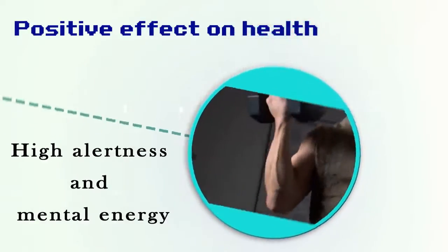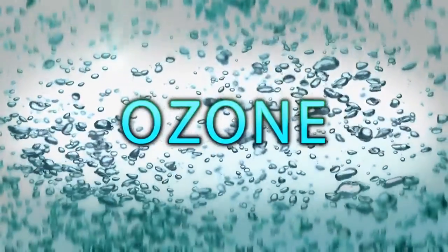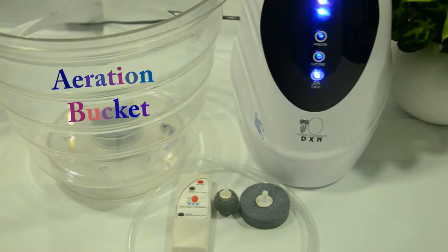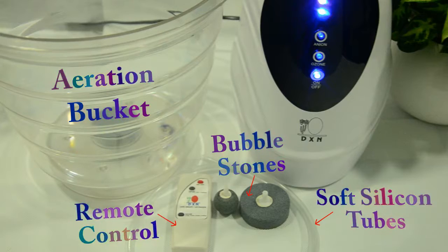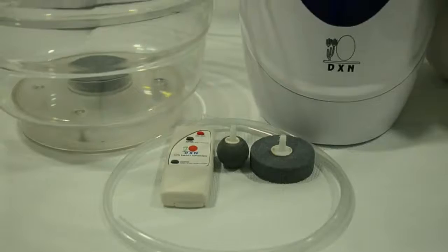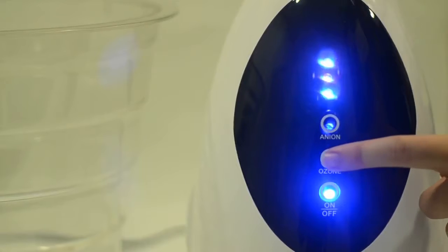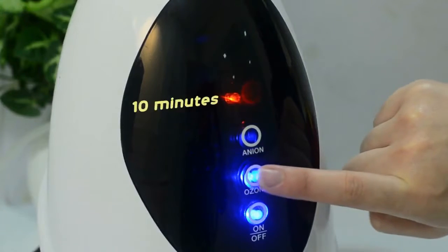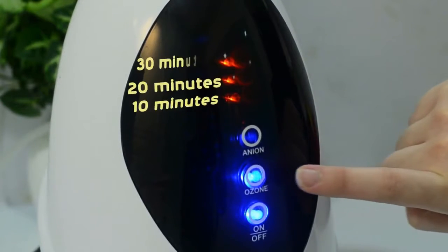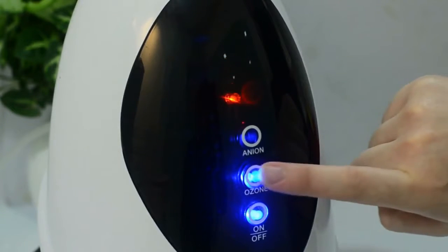These are the accessories for the ozone mode. Here is how you use the DX Smart Ozonizer to aerate water. At the back of the ozonizer is a hole — fix one end of the silicon tube here and the other end to the aeration bucket. Add water into the aeration bucket and click on the ozone mode. This red light indicates the ozone mode. Ozone mode works 10 minutes by default; press the button to change the timing. Pressing the button for the fourth time activates 60-second alternate on/off continuous circulation.